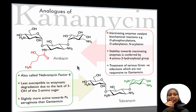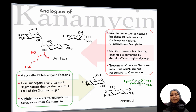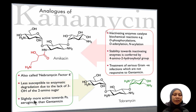The second derivative from this modification is tobramycin. Because of the lack of an OH group — it has no OH group at that position, and there is an NH2 instead — it is now less susceptible to enzymatic degradation. Therefore, tobramycin is actually more active towards Pseudomonas aeruginosa than gentamicin.